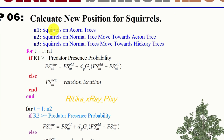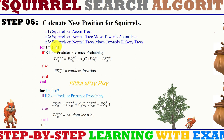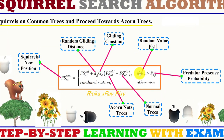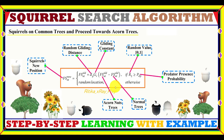For n1 flying squirrels on the acorn tree (loop 1 to n1), we check predator presence: if true, update randomly; otherwise, update using the scenario 1 equation. For n2 flying squirrels on the normal tree moving toward the acorn tree (loop 1 to n2), we again check predator presence: if the condition is true, update using the scenario 2 equation; otherwise, update randomly. In scenario 2, squirrels on the normal tree move toward the acorn tree.